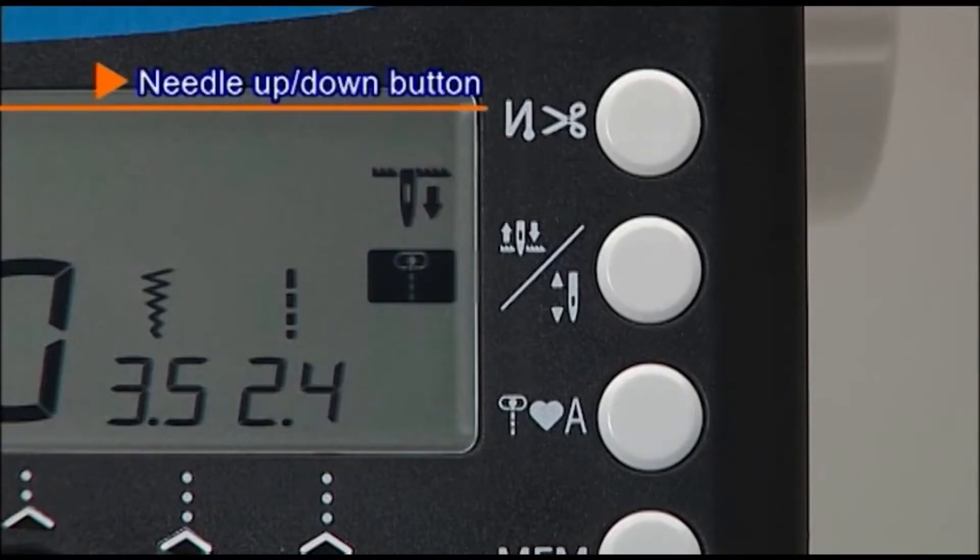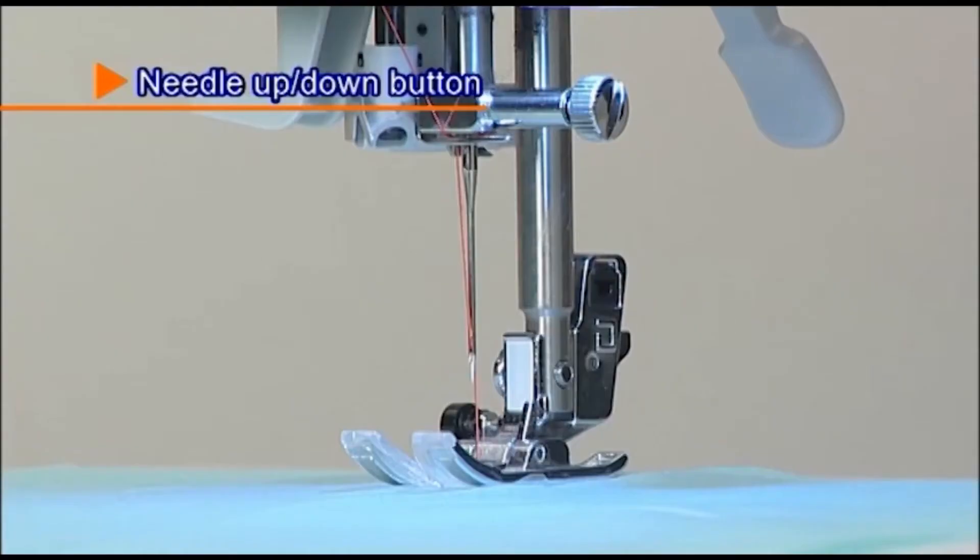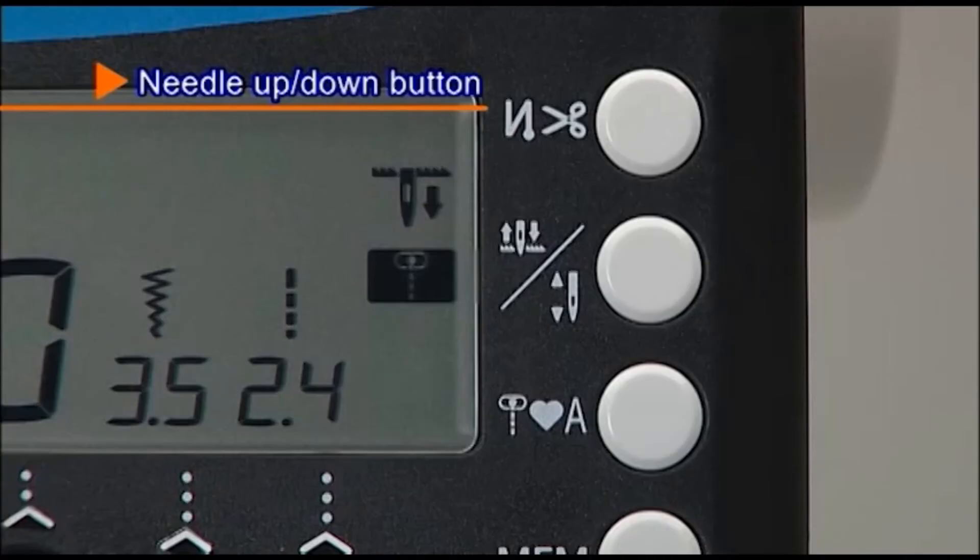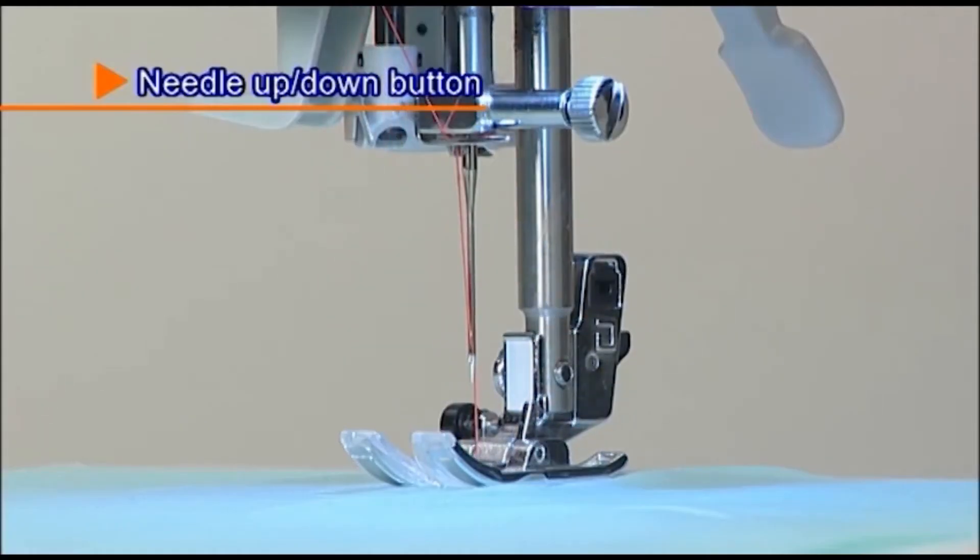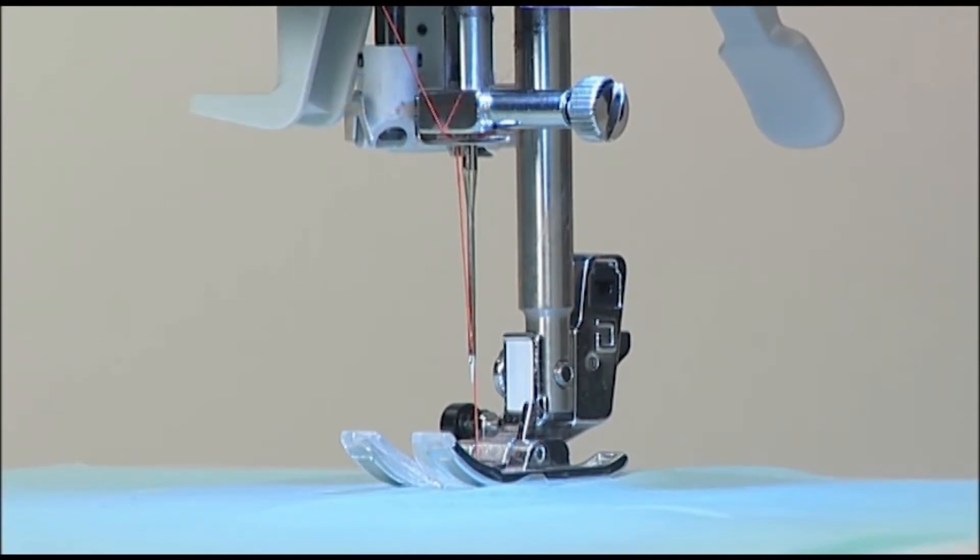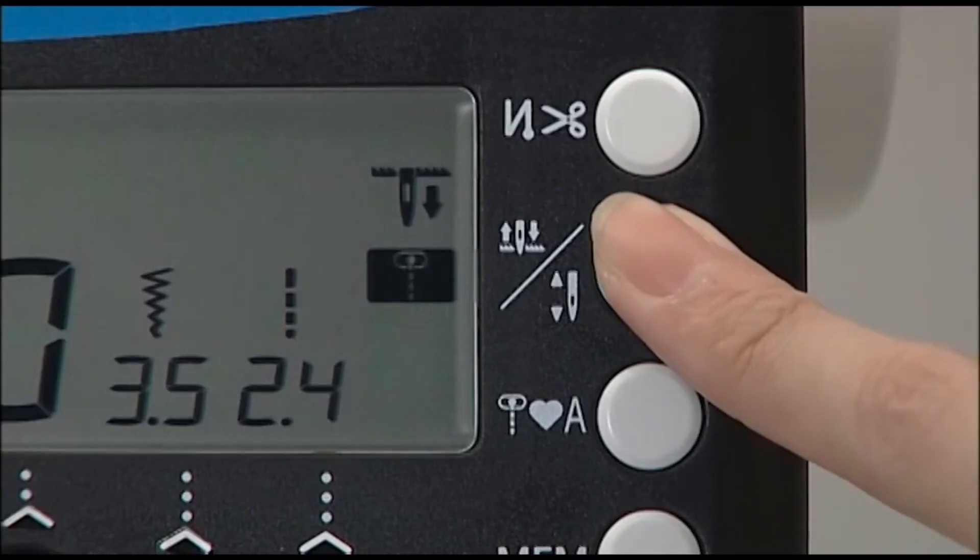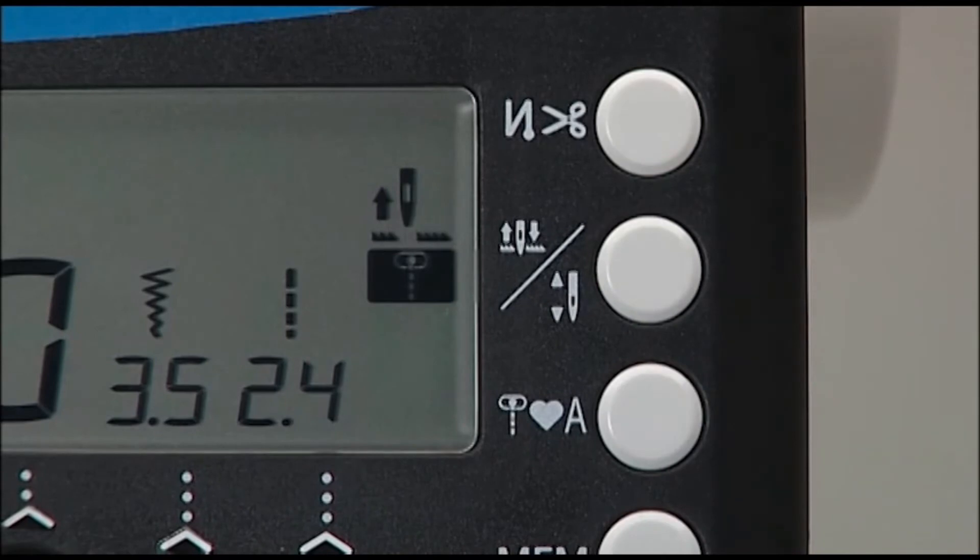The needle position will change by pressing the needle up-down button while the machine is stopped. Press the needle up-down button to move the needle position up or down. When the button is pressed continuously, you can choose the needle stop position, either up or down.